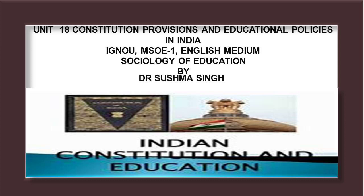Apart from the Constitution that has provisions on education, educational policies are also articulated through legislations. Some of the important central legislations bearing on the subjects allotted to the Department of Secondary and Higher Education are: The University Grants Commission Act, 1956 — the UGC was established through this act to regulate important issues pertaining to the functioning of universities. The All India Council for Technical Education Act, 1987 — it led to the establishment of an All India Council for Technical Education for the proper planning and coordinated development of the technical education system in India.